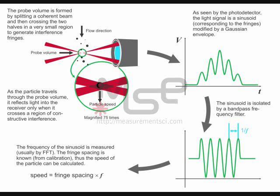As a particle travels through the probe volume, it reflects light into the receiver within the probe. The signal is processed through various steps, and the speed of that particle is calculated and time stamped.